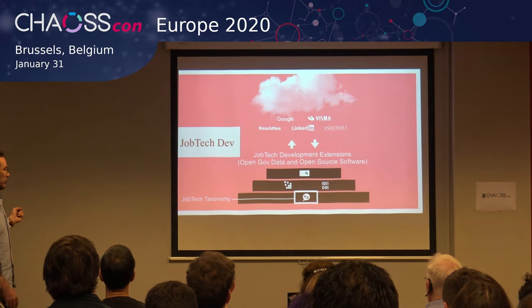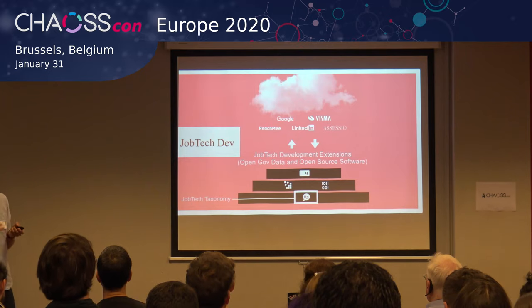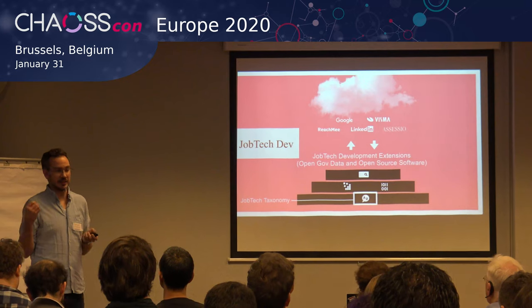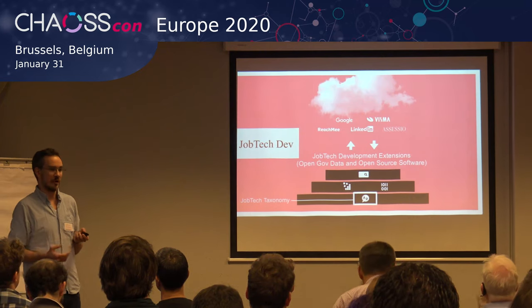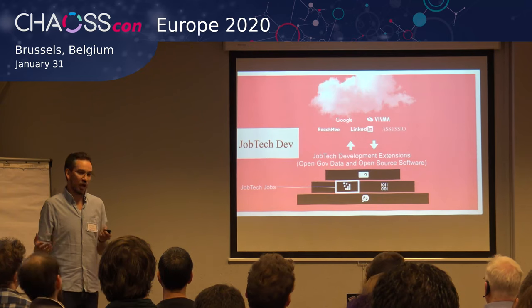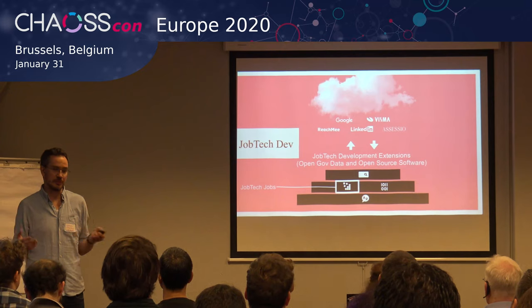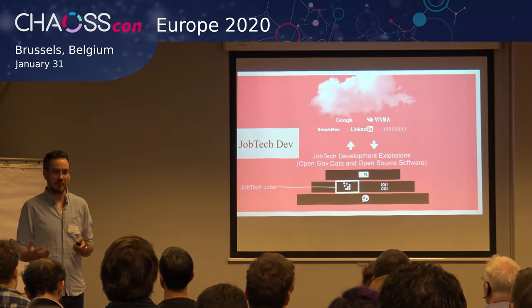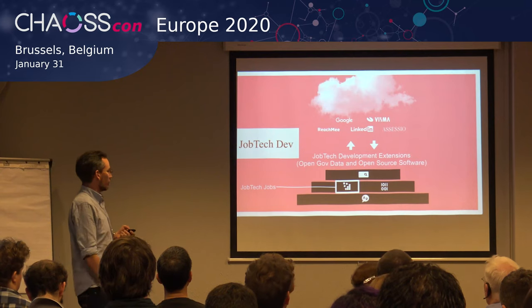A quick review of the platform: it's basically three open government data pools and a bigger open source project. The first is a taxonomy — a taxonomy of common wording and labels for skills, job titles, and the relationships among them, making sure everyone speaks the same language. Second is a pool of job ads, aggregated from scraping and partnerships, covering all job ads on the Swedish labor market and making them available to all ecosystem companies and organizations.